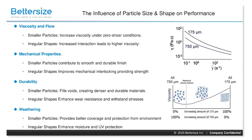In summary, both particle size and shape are critical factors that influence the dispersion, stability, hiding power, mechanical properties, and final appearance of inks, paints, and coatings. Proper optimization of these factors is essential for achieving high-performance formulations.